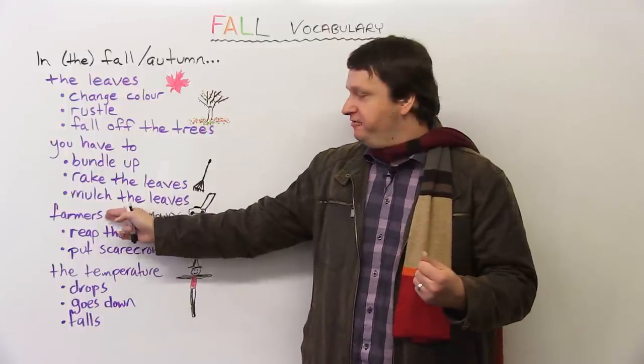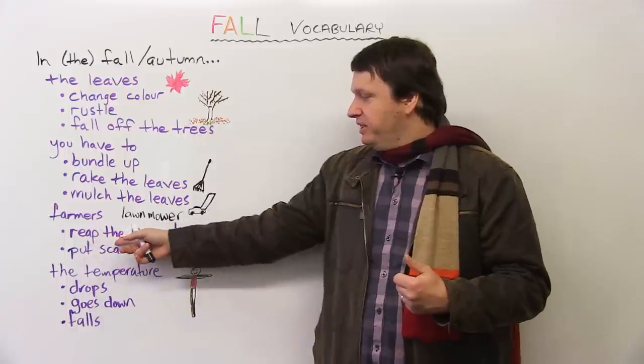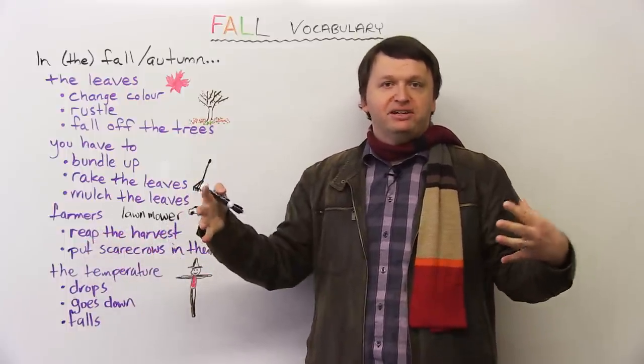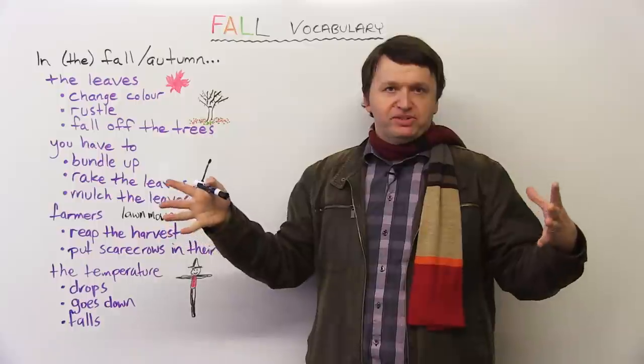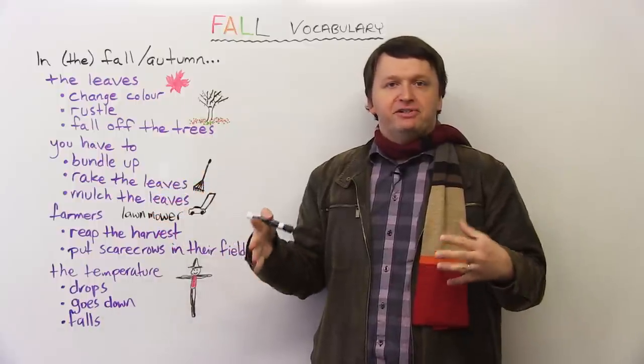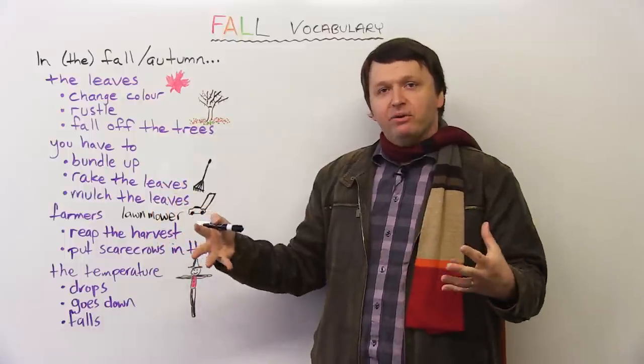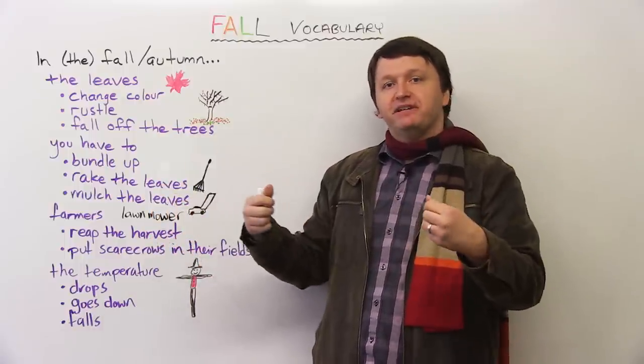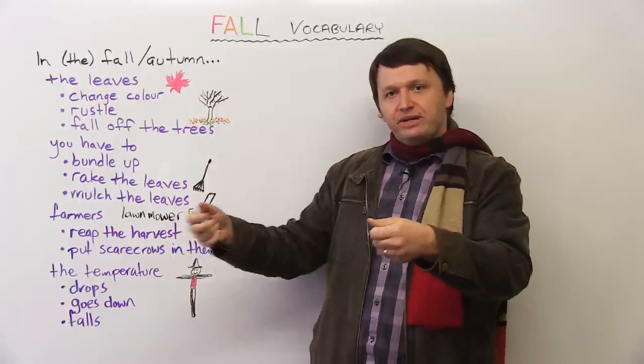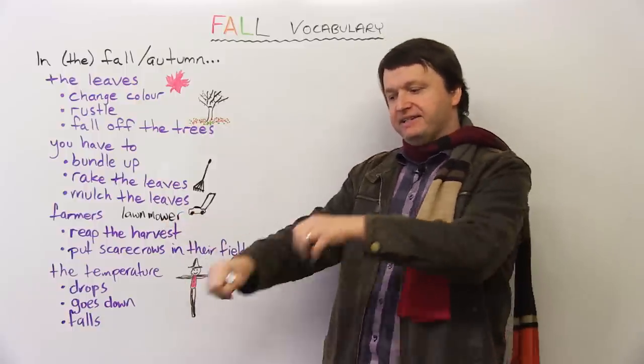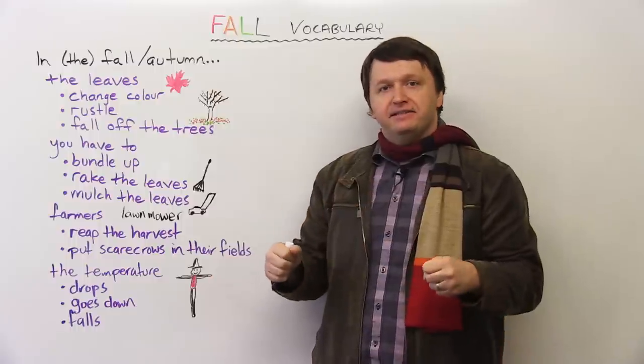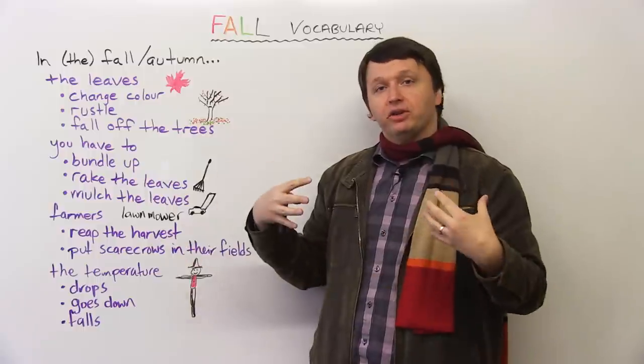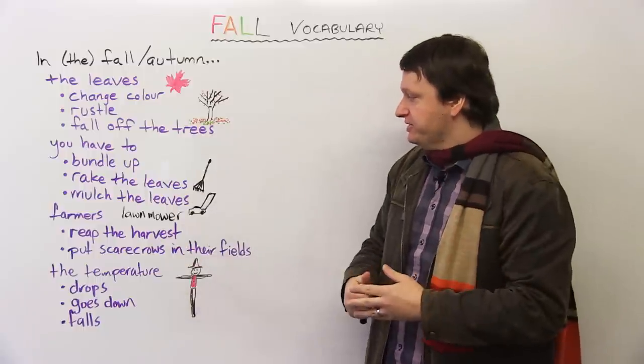Talking about farmers in the fall, they reap the harvest. So the harvest is the full collection of fruit, vegetables, etc., that the farmers have grown, and now it's the fall. It's time to collect the food from the fields. So farmers reap the harvest. They collect it and take it, and make sure that everything is used, and they take all the corn, all the other vegetables as well.